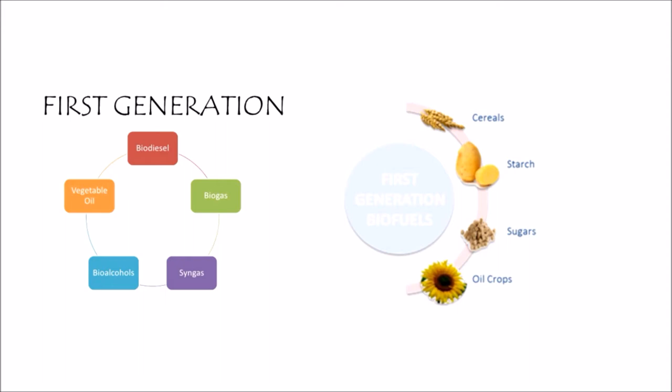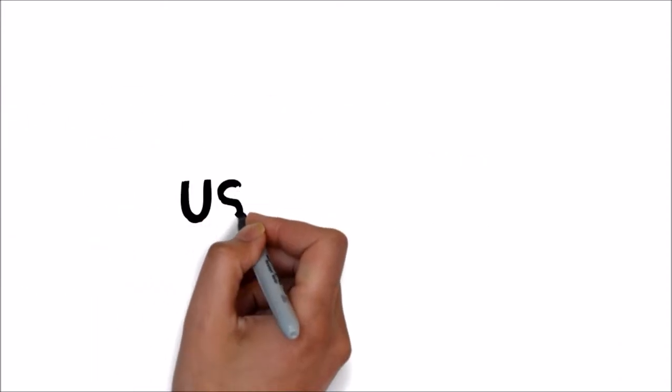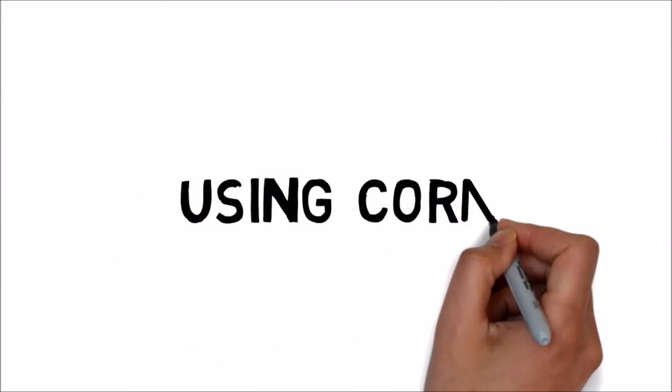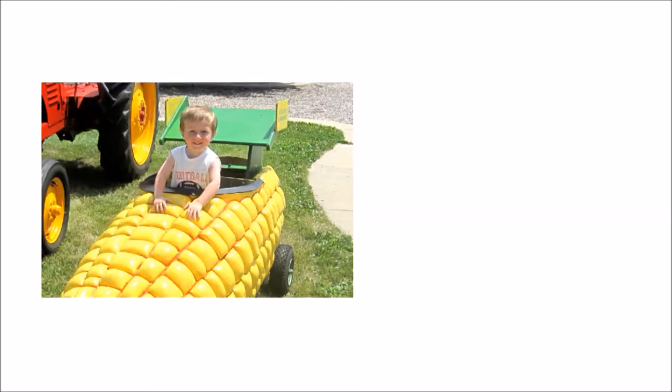The original biofuels allude to the powers that have been gotten from sources like starch, sugar, creature fats and vegetable oil. The oil is acquired utilizing the ordinary systems of generation. The most famous sorts of original biofuels are using corn. Corn is the fundamental wellspring of the world's fuel ethanol and the lion's share of that corn produced in the US.